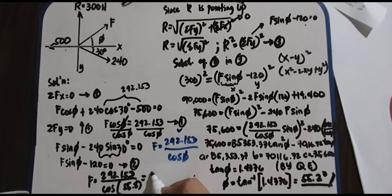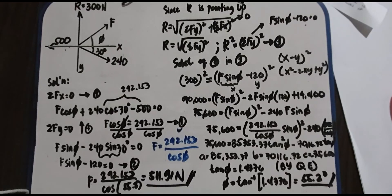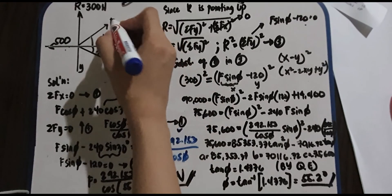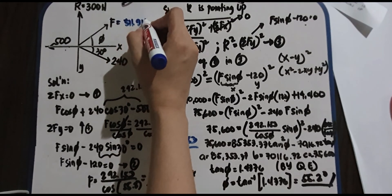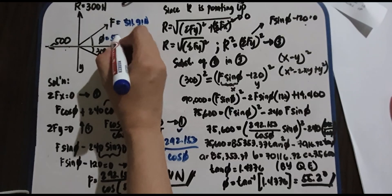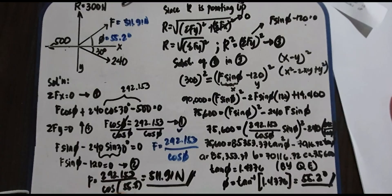So the answer for your F is, we have 511.91 Newton. So that is your final answer. How is that? It's a lot. All you have to do is put our answer here. We have 511.91 Newton and your phi must be 55.2 degrees. So that is the final answer.